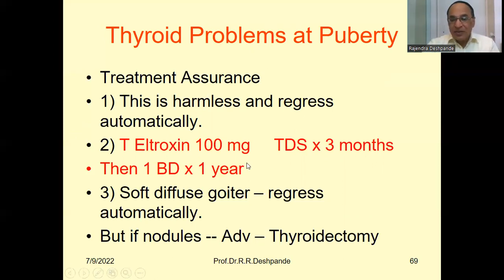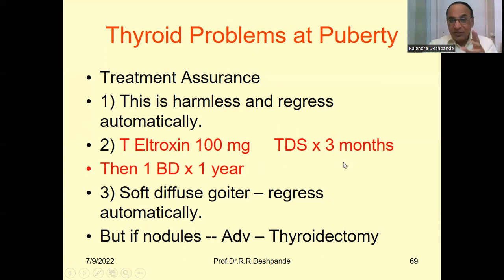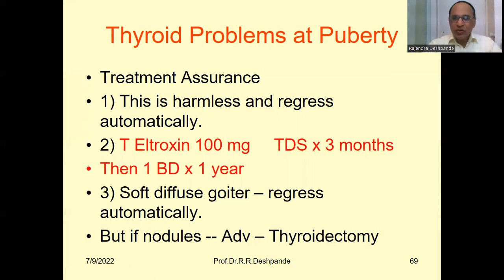Sometimes supplements are given, like tablet L-Thyroxine 100 milligram, three times a day — morning, afternoon, evening — for three months. Then gradually taper: one tablet twice daily, morning and evening, for one year. First three times a day for three months, then reduce to two times a day for one year.